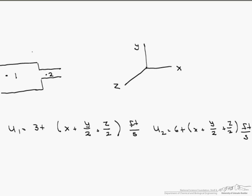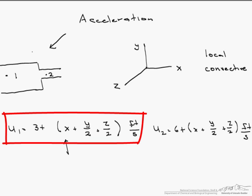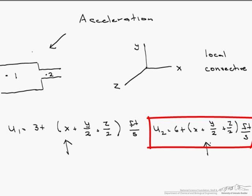In this video, we are trying to find the acceleration at two different points within this system. We are looking for both the local and the convective acceleration. Here we are given two velocity profiles—the first one at point 1 and the second one at point 2.